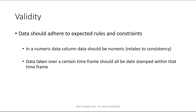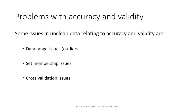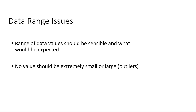Another validity issue is a numeric data set where the data should be numeric — that's a consistency issue as well. Problems with accuracy and validity can include issues with the range of the data, which is the outlier issue, issues with set membership, and issues with cross-validation.